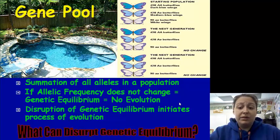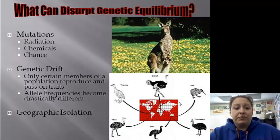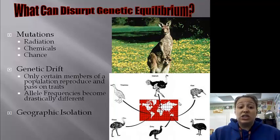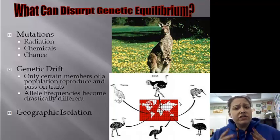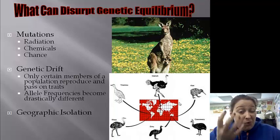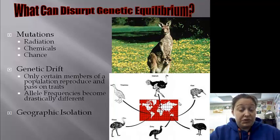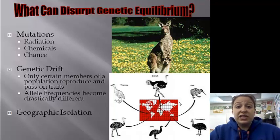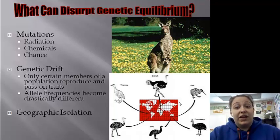Disruptions of genetic equilibrium initiate the process of evolution. What can disrupt it? Mutations — such as radiation, chemicals, or even randomness — can cause a mutation in the gene. We also have genetic drift, where only certain members of a population reproduce and pass on traits, making allele frequencies drastically different. Geographic isolation also plays a role: if organisms are split into different environments under different pressures, only certain individuals with beneficial traits will survive, driving evolution.